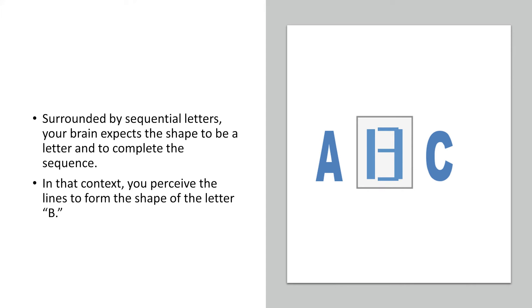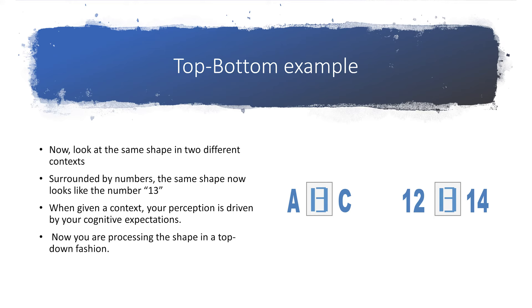Look at the shape in the box. Seen alone, your brain engages in bottom-up processing — there are two thick vertical lines and three thin horizontal lines. There's no context to give it a specific meaning, so there's very little or no top-down processing involved. Surrounded by sequential letters, your brain expects the shape to be a letter and completes the sequence. In that context, you perceive the lines to form the shape of the letter B. Now, surrounded by numbers, the same shape now looks like the number 13. When given context, your perception is driven by your cognitive expectations — now you're processing the shape in a top-down fashion.